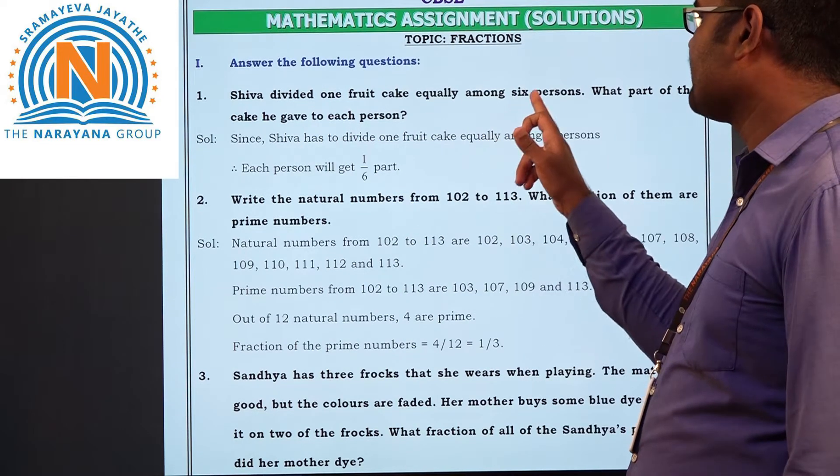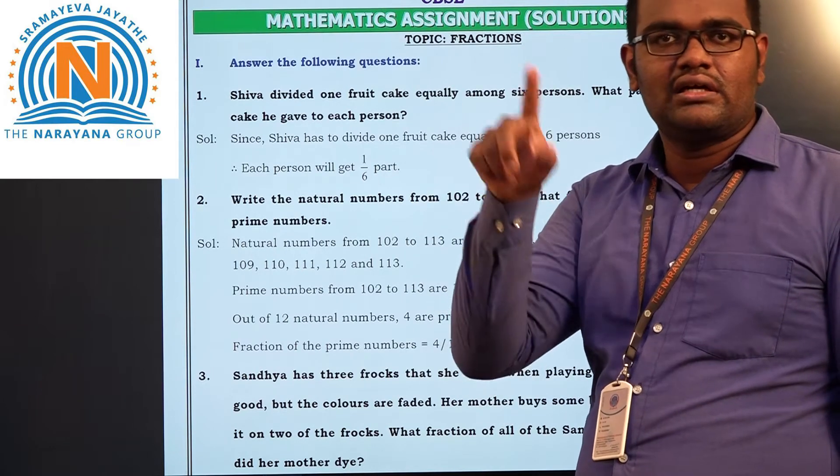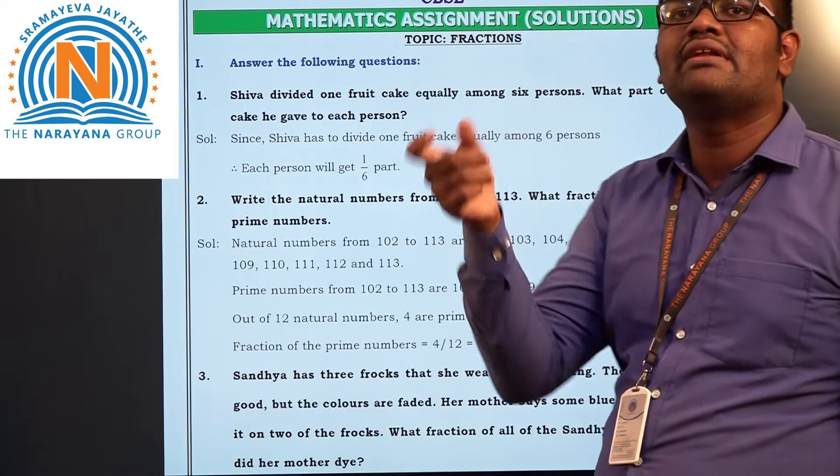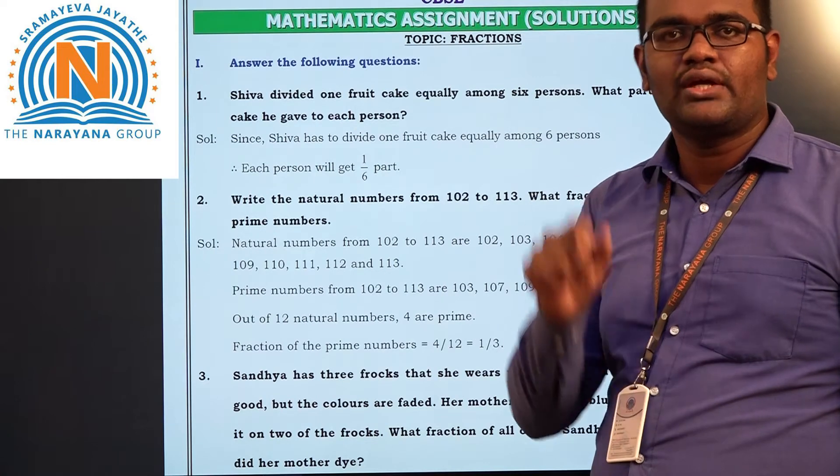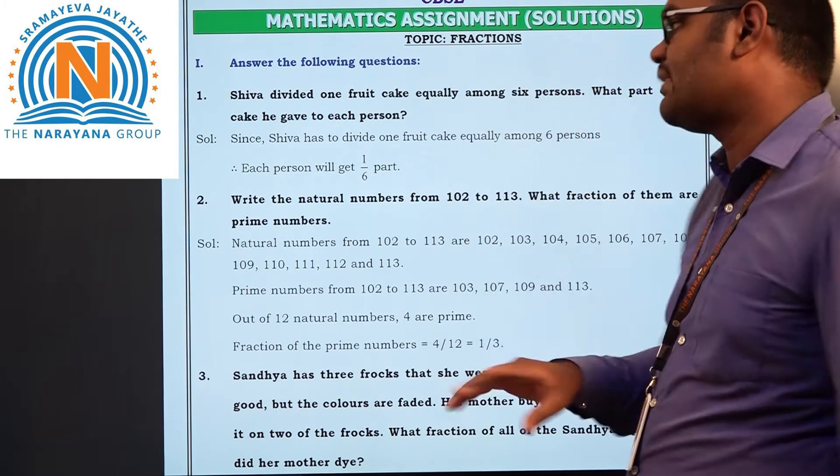Shiva divided one fruit cake equally among 6 persons. One cake is dividing into 6 equal parts, and he gave to each person. What part will he give to each person? 1 by 6th of the part. Total part is 6. For each member he is going to give 1 part, so 1 by 6 part.